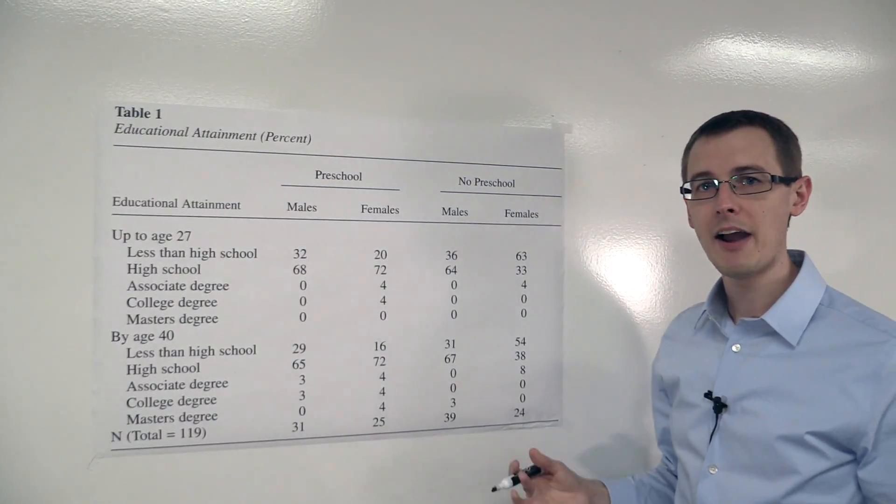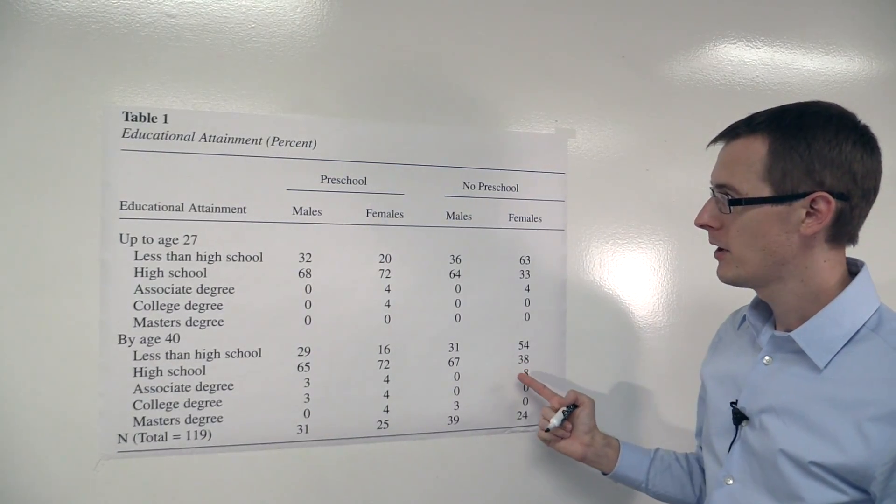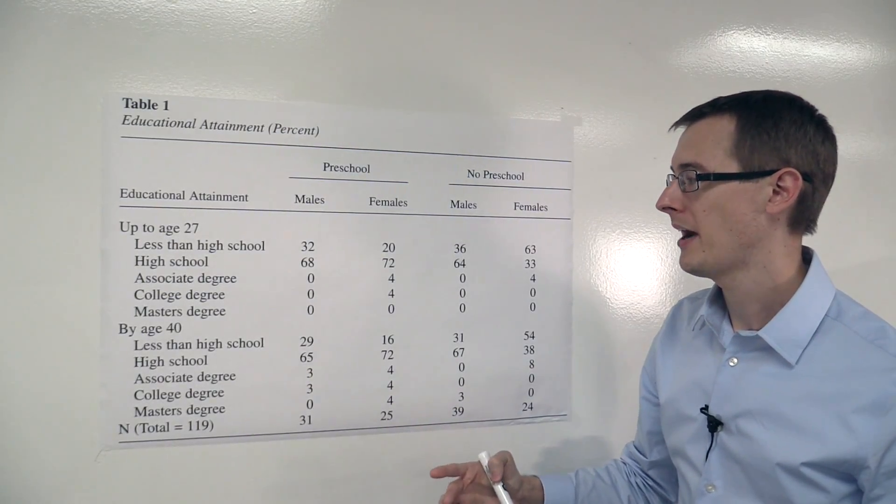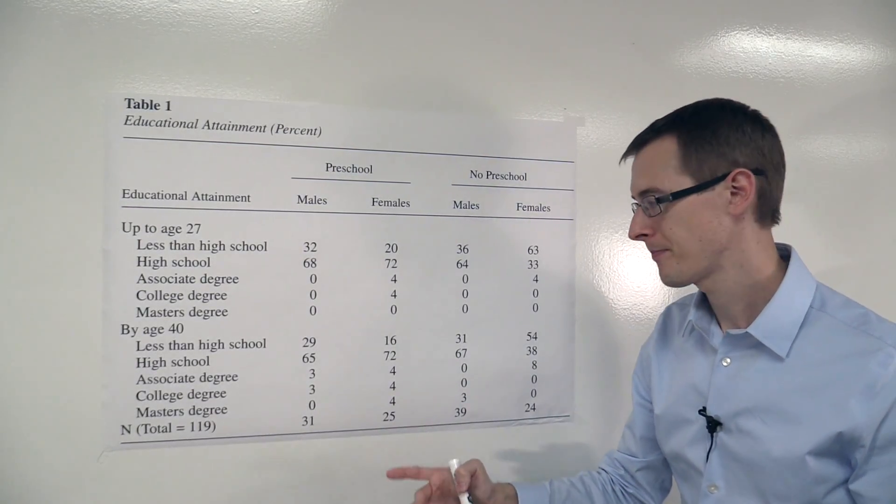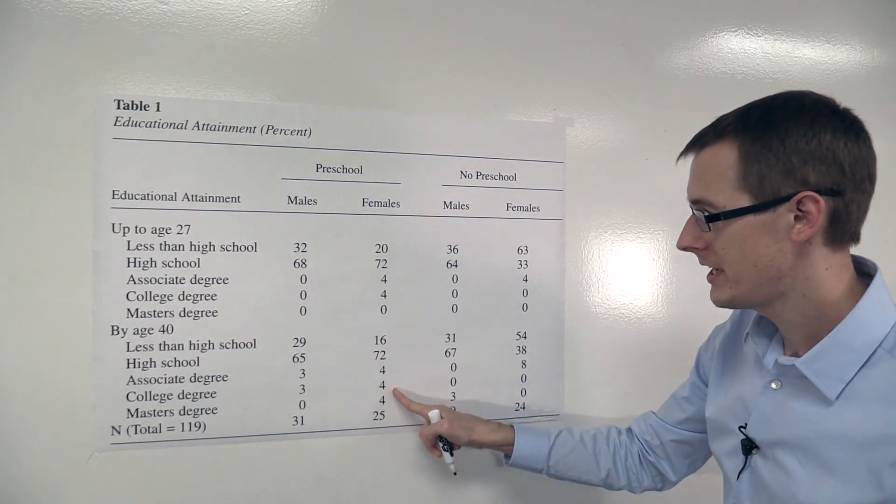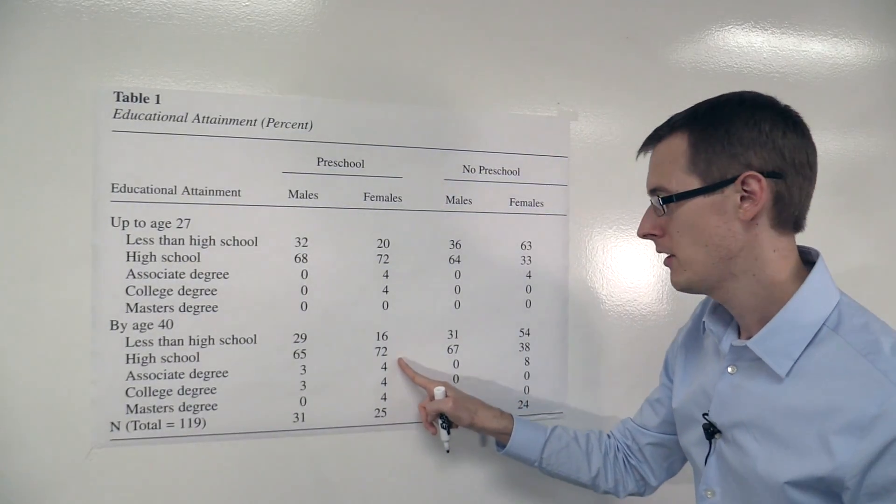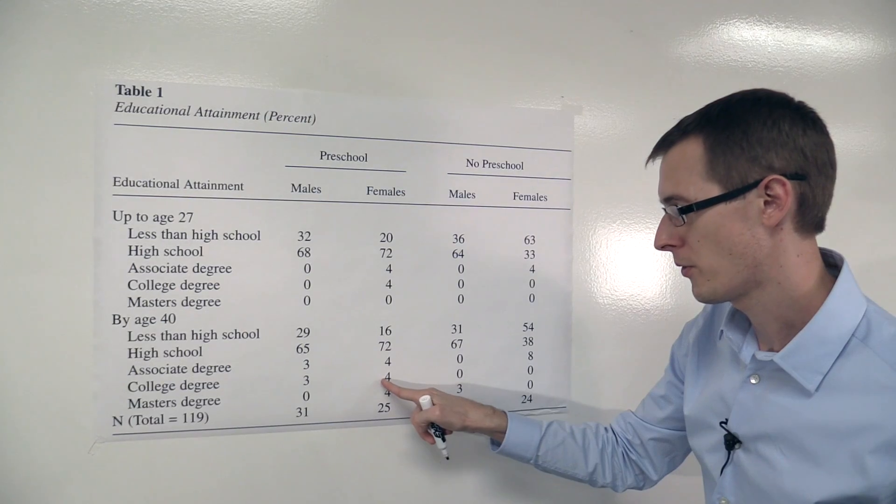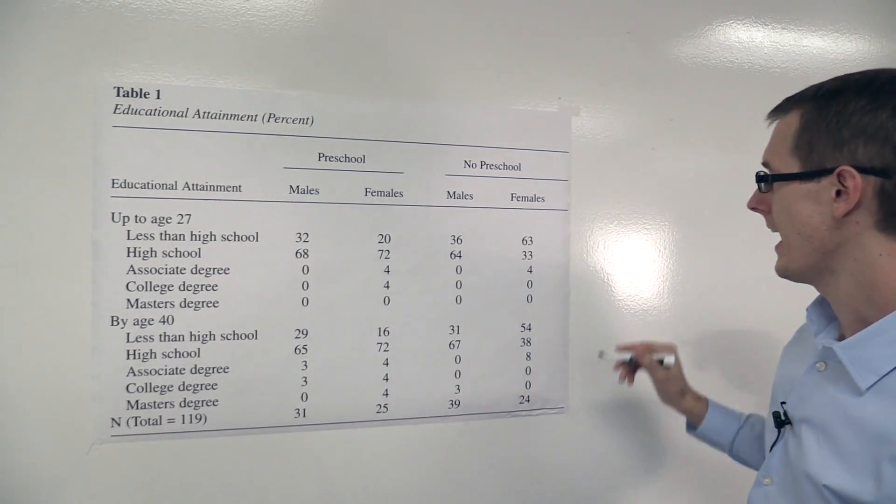So what's the average treatment effect for females of getting preschool on whether you have at least a high school education? Well, over here we see from our raw data that 72 plus 4 is 76, plus 4 is 80, plus 4 is 84%. 84% of females in the treatment group had at least high school education.